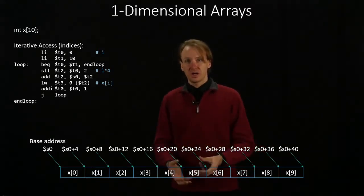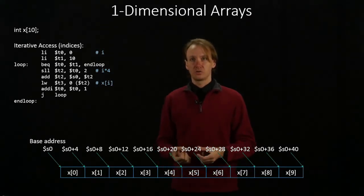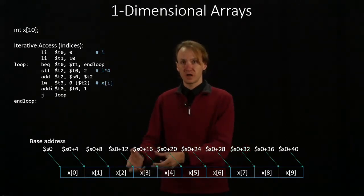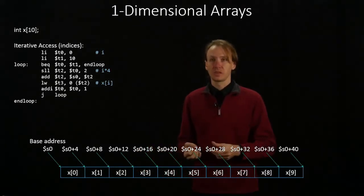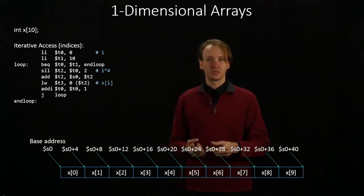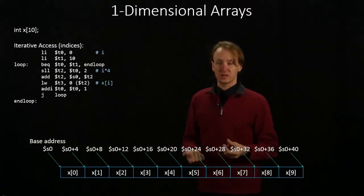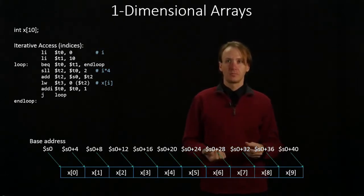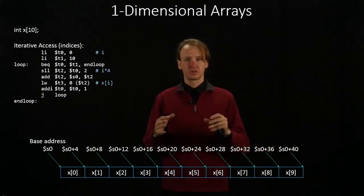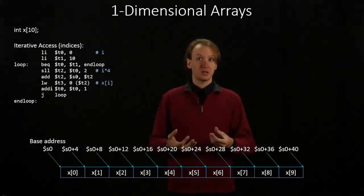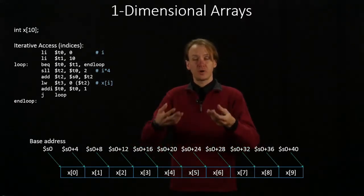Then I can go actually access that data. I can load the value from t2, where t2 contains the value of s0 plus my offset. In this case, I'm sticking my result into t3, and I could do something useful with it at that point. But in this case, I'm interested in just showing how the loop works. So I'm just going to increment my index by one, and then go back through my loop again.